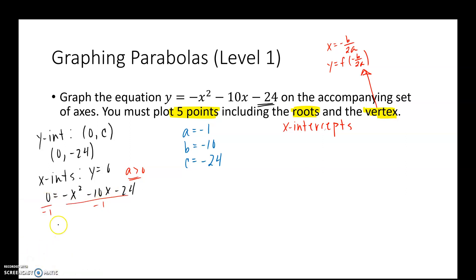Okay, well, how do I make it not negative? I'm just going to divide both sides of my equation by negative 1. 0 divided by negative 1 stays 0. But dividing the right-hand side by negative 1, it makes all my factor, it changes all my signs. Negative x squared divided by negative 1 is positive x squared. Negative 10 divided by negative 1 is also positive 10. Negative 24 divided by negative 1 is 24.